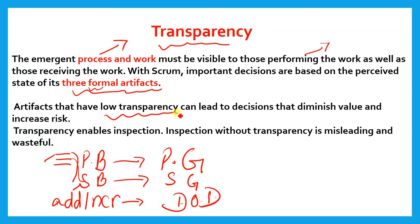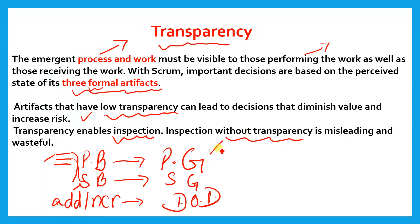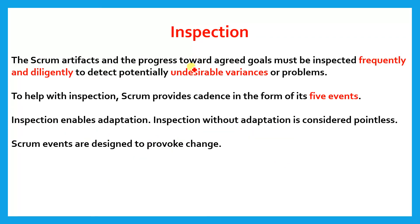Artifacts that have low transparency — meaning less clarity — can lead to decisions that diminish value and increase risk. For example, if our product goal is not visible or not according to our objective, it can lead to poor decisions. Transparency enables inspection, which is the second pillar. If our work is transparent, it enables inspection. Inspection without transparency is misleading or wasteful — if things are not clear to stakeholders, inspection will be misleading or a waste of time. Everything in Scrum should be transparent and visible.